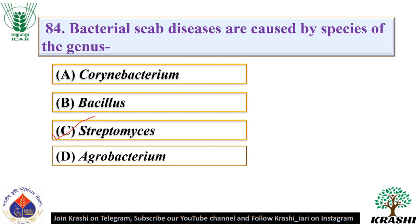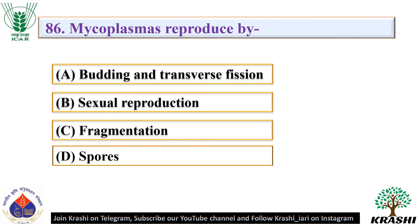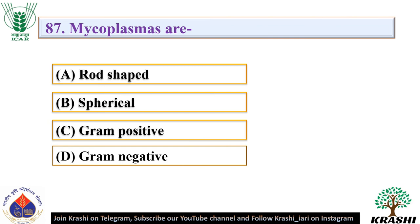Question number 85: The non-root nodule forming nitrogen fixing bacterial genus is. The correct answer is option B — Azospirillum. Question number 86: Mycoplasmas reproduce by — they reproduce by budding and transverse fission. Question number 87: Mycoplasmas are — they are gram negative. Mycoplasmas have no flagella and produce no spores.